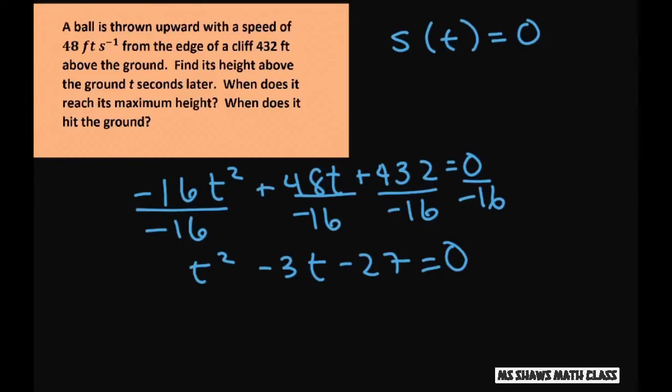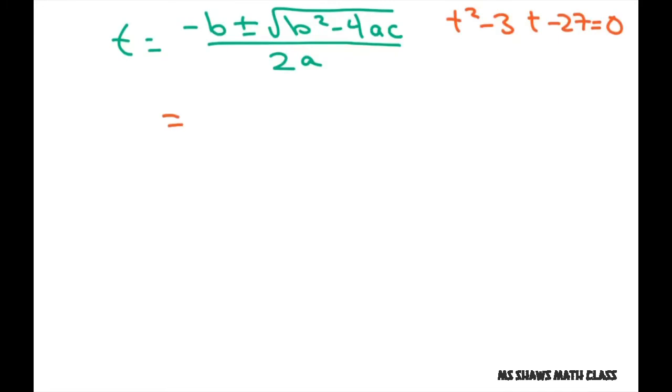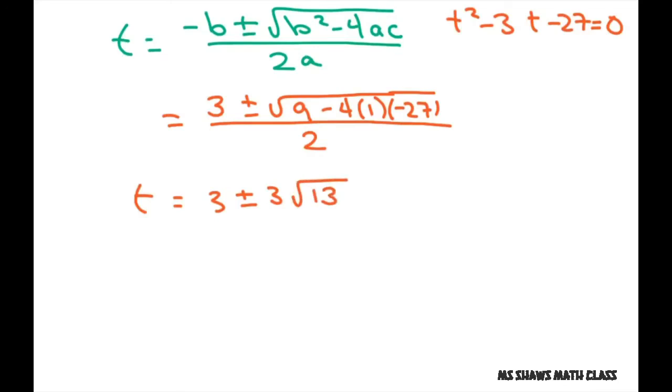Since we can't factor that, we're going to use the quadratic formula. So we'll get t equals negative b plus or minus square root of b squared minus 4ac divided by 2a. And again, we have t squared minus 3t minus 27 equals 0. So we're going to get negative b, so that's going to end up being positive 3 plus or minus square root of 9 minus 4a is 1 and c is negative 27, all divided by 2a, so that's 2. So this is going to be t equals 3 plus or minus 3 square root of 13 divided by 2.